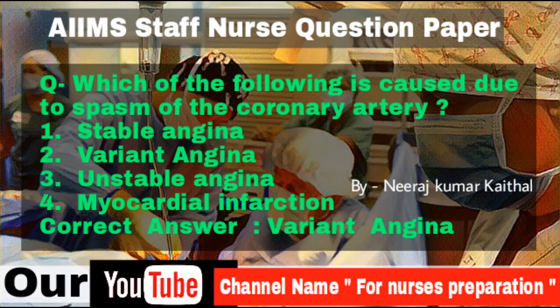Question: Which of the following is caused due to spasm of the coronary artery? Options: Stable Angina, Variant Angina, Unstable Angina, Myocardial Infarction. Correct answer is Variant Angina. Variant Angina is chest pain due to coronary artery spasm — a sudden constriction of the coronary artery — depriving the heart muscle (myocardium) of blood and oxygen. This is also called Prinzmetal's angina. Coronary artery spasm can be triggered by emotional stress, medicine, street drugs such as cocaine, or exposure to cold.